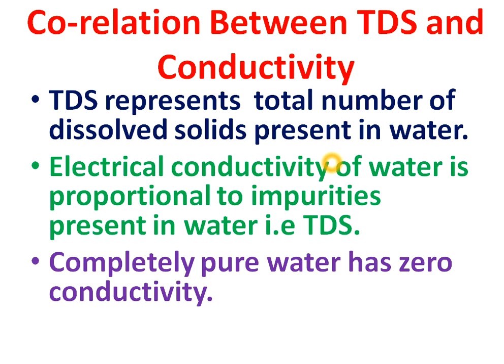First of all, we will see some physical significance of TDS and conductivity. TDS represents the total number of dissolved solids present in water. And the electrical conductivity of water is proportional to the ions present in that water, that is TDS. That means electrical conductivity is directly proportional to TDS — so if our water has high TDS, then that water should have high electrical conductivity, because these both are directly proportional.